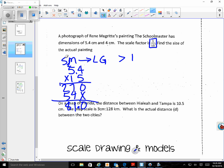So the length is 81 centimeters. Now we're going to find the width, which is just 4 times 15, and that is 60. So the dimensions of the painting are 81 centimeters by 60 centimeters.